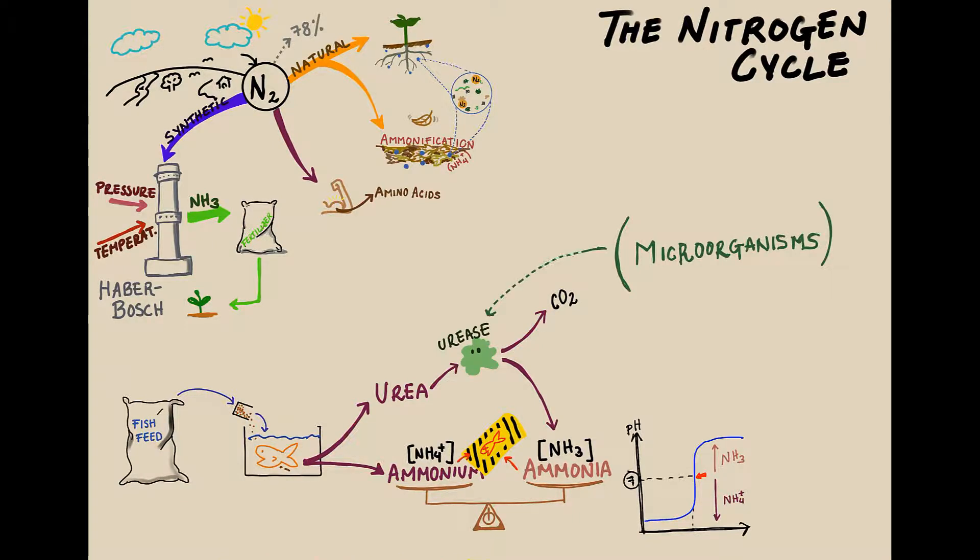In general, microorganisms play a crucial role in the nitrogen cycle and in an aquaponics system. In fact, the microorganisms use the ammonium and turn it in the first step to nitrite and in the second step to nitrate.